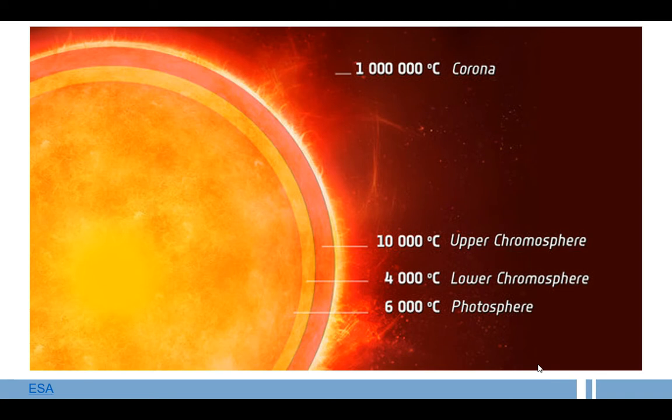The hottest is the corona, which has 1 million degrees Celsius. Secondly is the upper chromosphere with 10,000 degrees Celsius, which is the surface temperature of the sun. 4,000 degrees Celsius is the lower chromosphere, and 6,000 degrees Celsius is the photosphere. According to the color, we can indicate the temperature of the sun, since sun is a star.